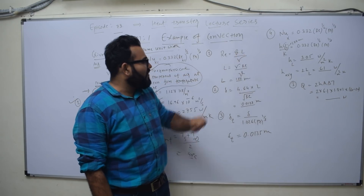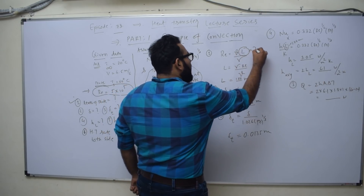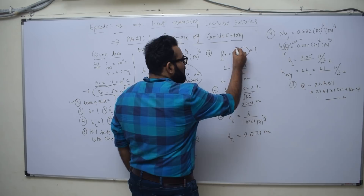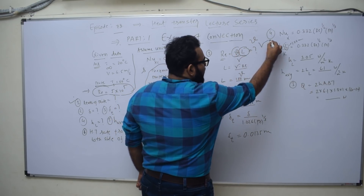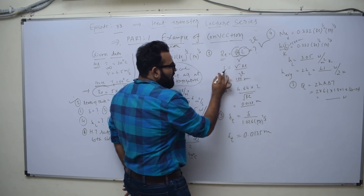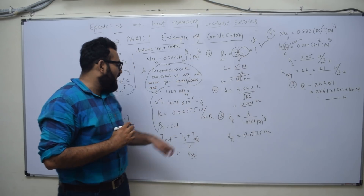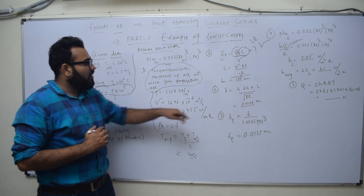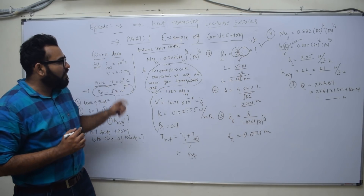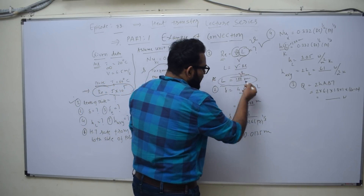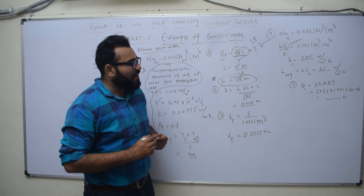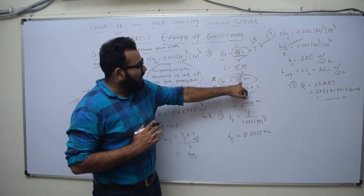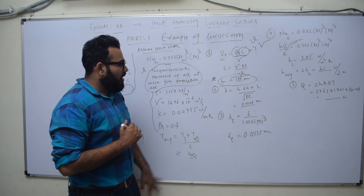Reynolds number is velocity into length upon kinematic viscosity. We need to find the length. Reynolds number is given, so we make length the subject: length = kinematic viscosity × Reynolds number / velocity. Kinematic viscosity is 16.86 × 10⁻⁶, Reynolds number is 5 × 10⁵, velocity is 4.5 m/s. The value you will get is 1.88 meters. So length = 1.88 m is our first answer.